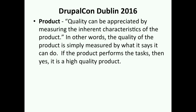The product perspective: quality can be appreciated by measuring the inherent characteristics of the product — quality is simply measured by what it says it can do. But is it what the end user really wants? Look at the Ferrari Italia: a high-quality product, very fast, very reliable — but what if you need to haul a load of firewood to the camping site? Then the Ferrari Italia is not going to do much good. You ultimately have to satisfy the user requirements.